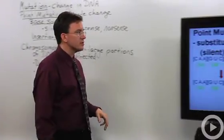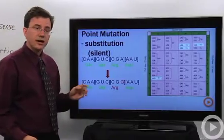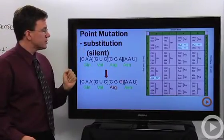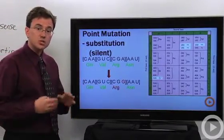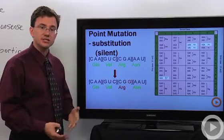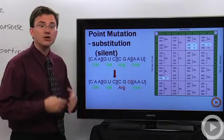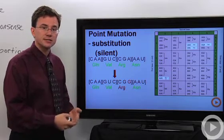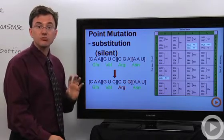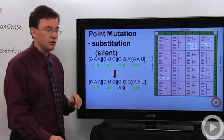Let's first start off with the point mutations. Now one kind of substitution is something called a silent mutation, and this is one reason why a lot of mutations seem relatively benign. They don't have any real bad effects because of something called redundancy within the genetic code.